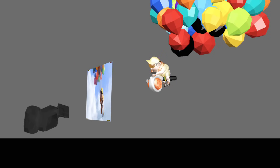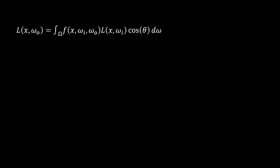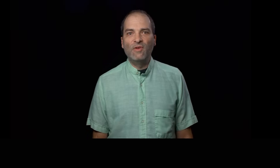To understand what color it should be, we have to figure out what part of the picture we see through that window. We translate this question — what color is this pixel — into math. This equation is called the Rendering equation. It's a mathematical description of how light bounces around in the environment.